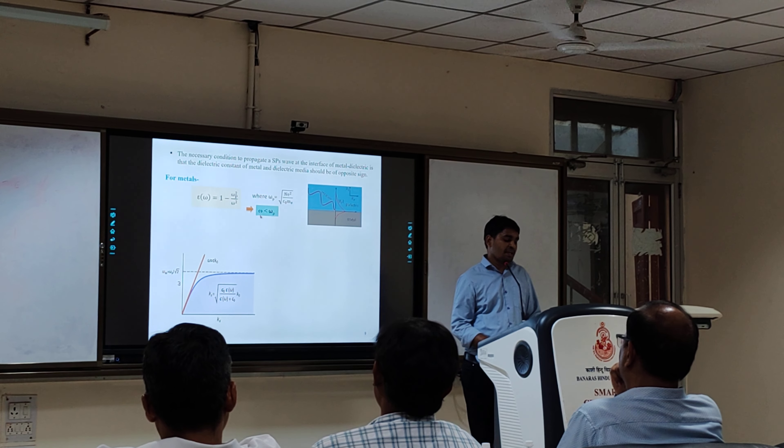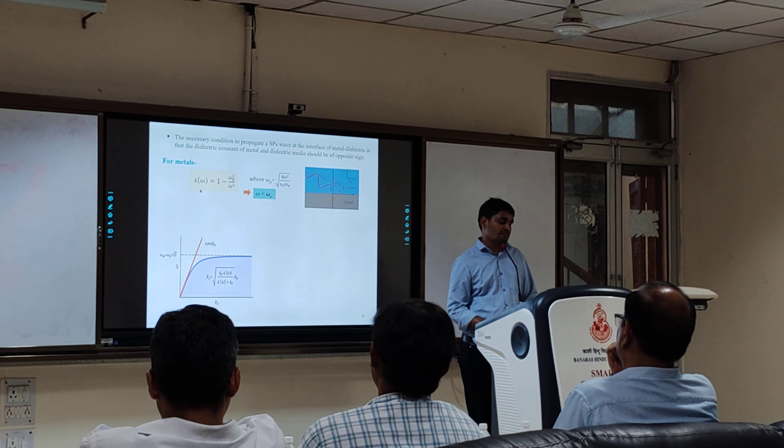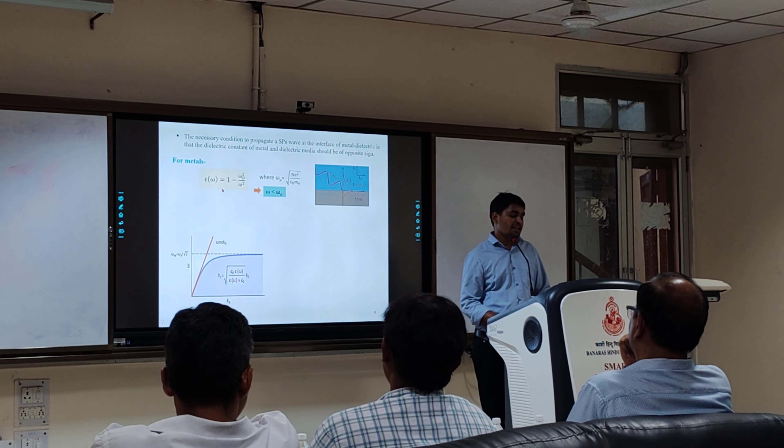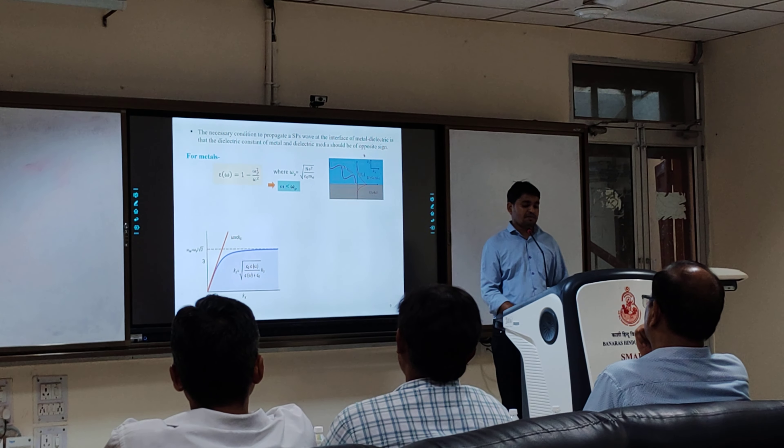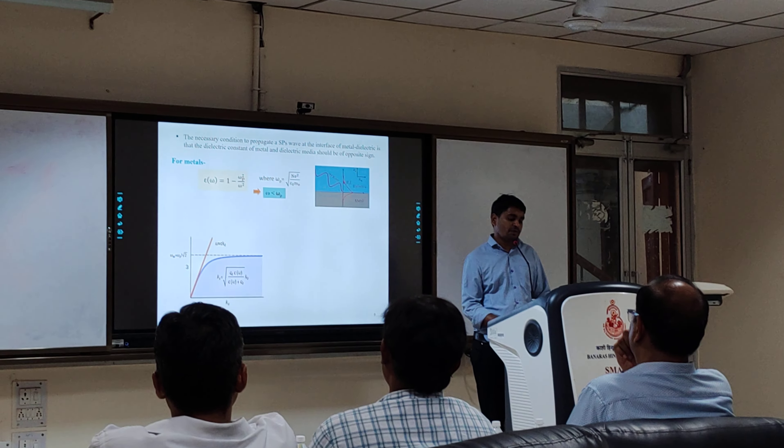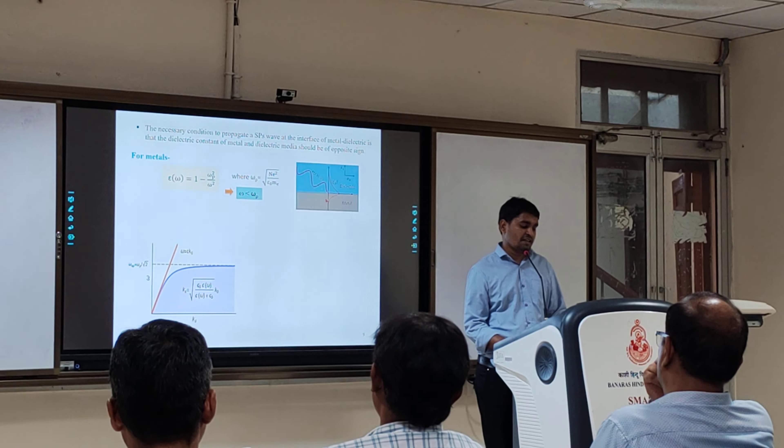If ω < ωp, we find the dielectric constant of metal is negative. Then, satisfying this condition, they propagate along the metal-dielectric interface, and the propagation constant of the wave is given by this relation.